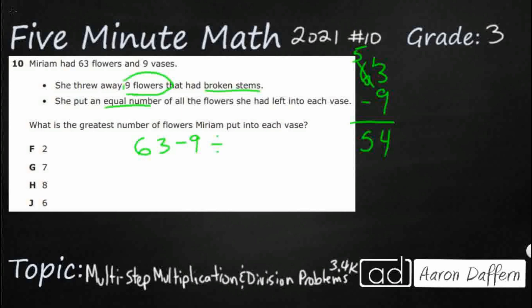Now let me show you something — this is something you're going to get into in fifth grade. We did two things first: we subtracted, then we're about to divide. But we have to put parentheses around the subtraction part, because division typically comes before subtraction when you have multiple steps. Multiplication and division always come before addition and subtraction. That's why we use parentheses — to make sure you subtract first.